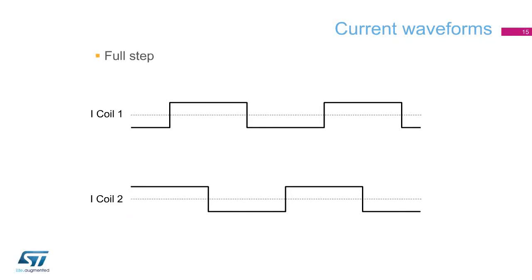The idealized current waveform for the two coil currents are square waves shifted 90 degrees in phase. The slope of the current changes will be limited by the inductance, and as we will see later, can have a dramatic effect on the performance of the motor. If the step sequence is reversed, one of the two current waveforms will be shifted 180 degrees as the motor rotates in the reverse direction.